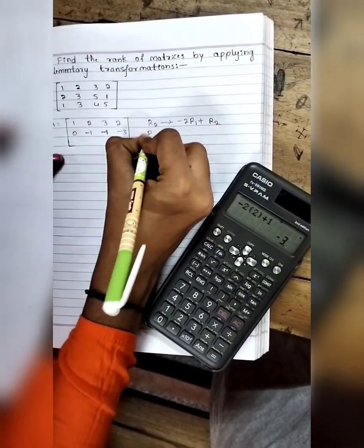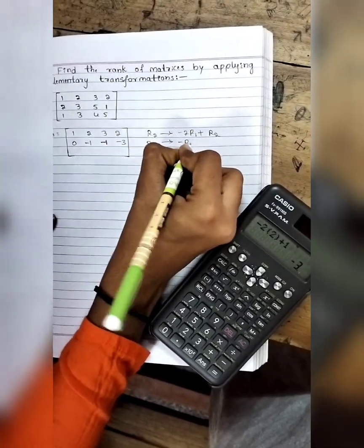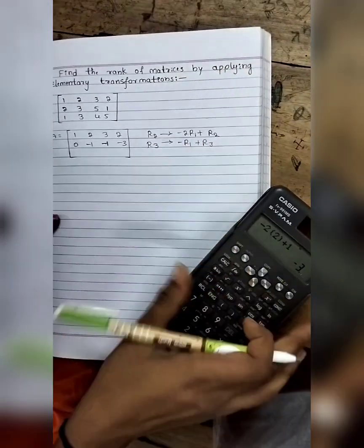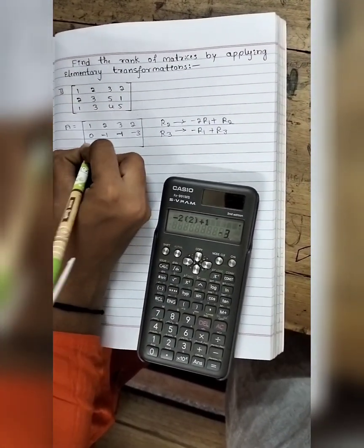Next R3. R3 written as minus R1 plus R3. Minus 1 plus 1 equals 0, we get 0.